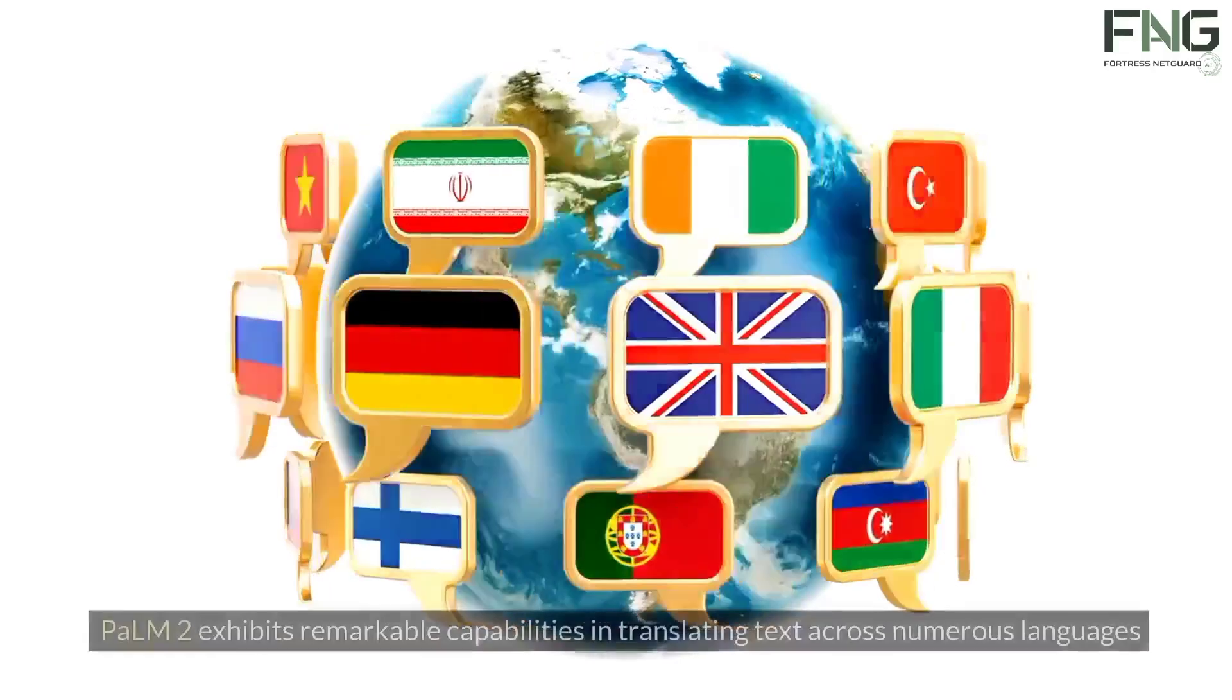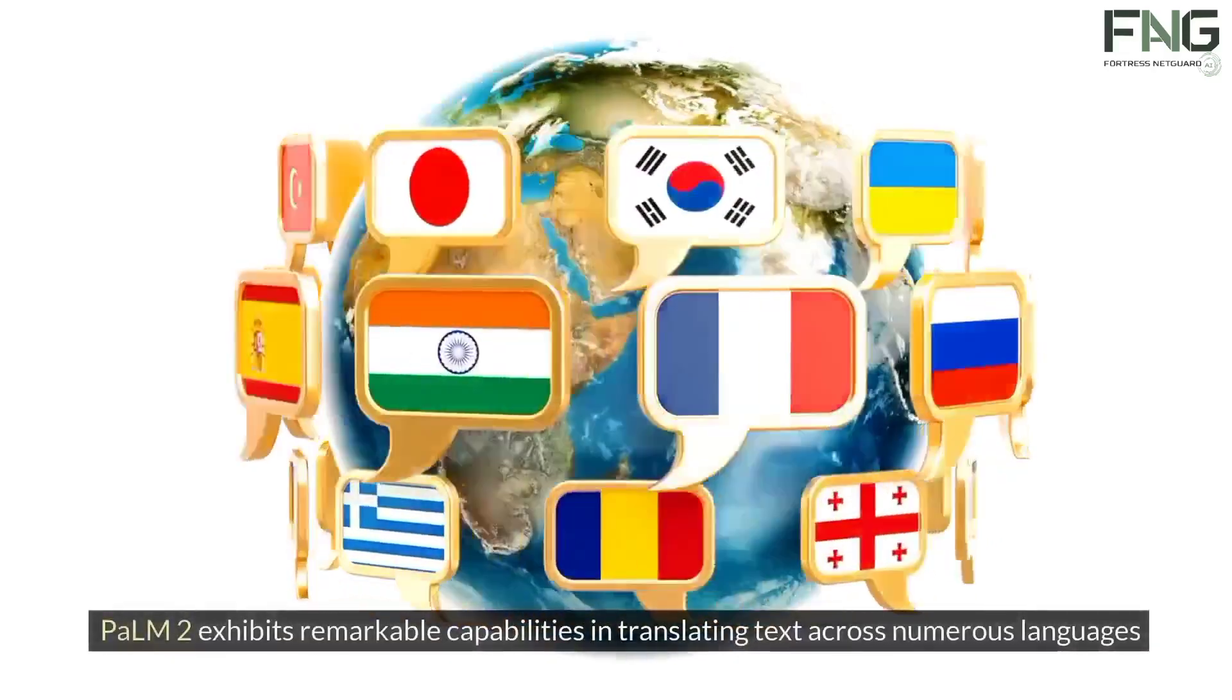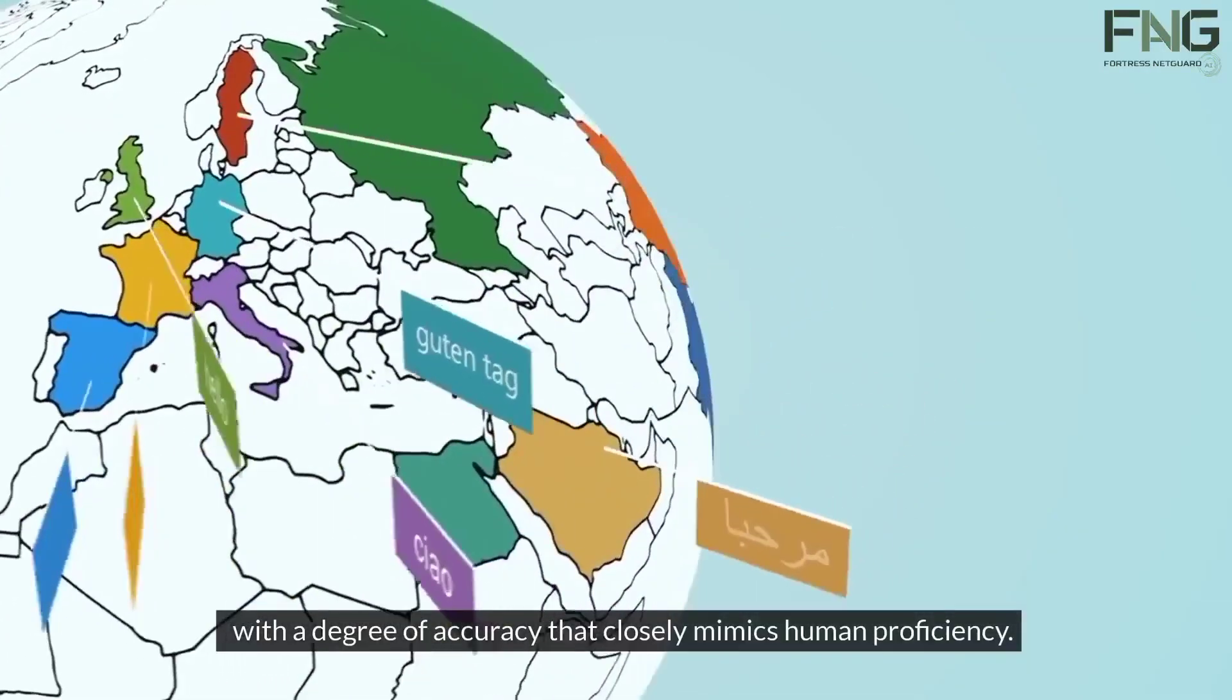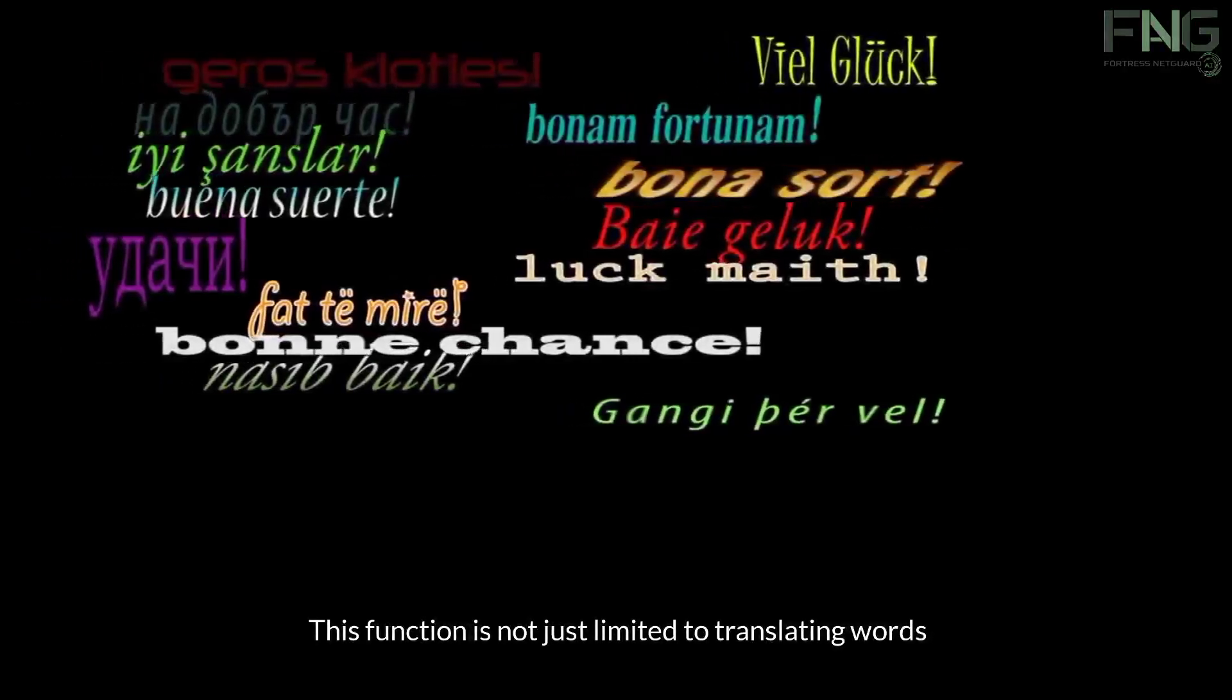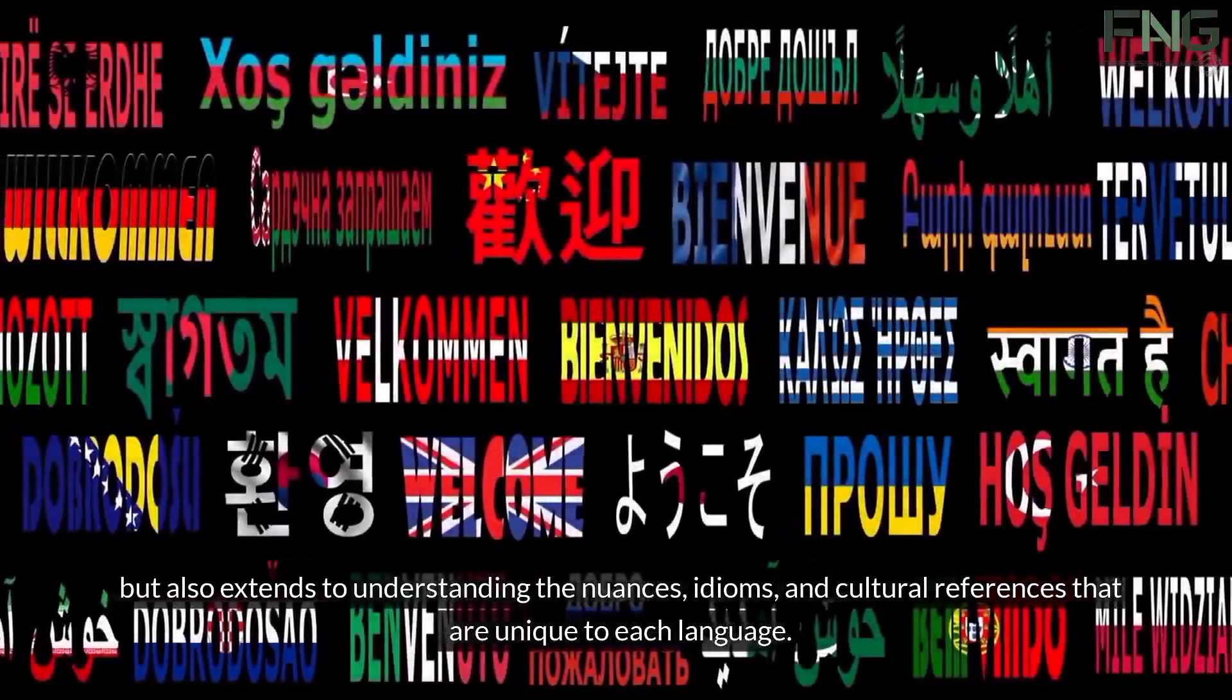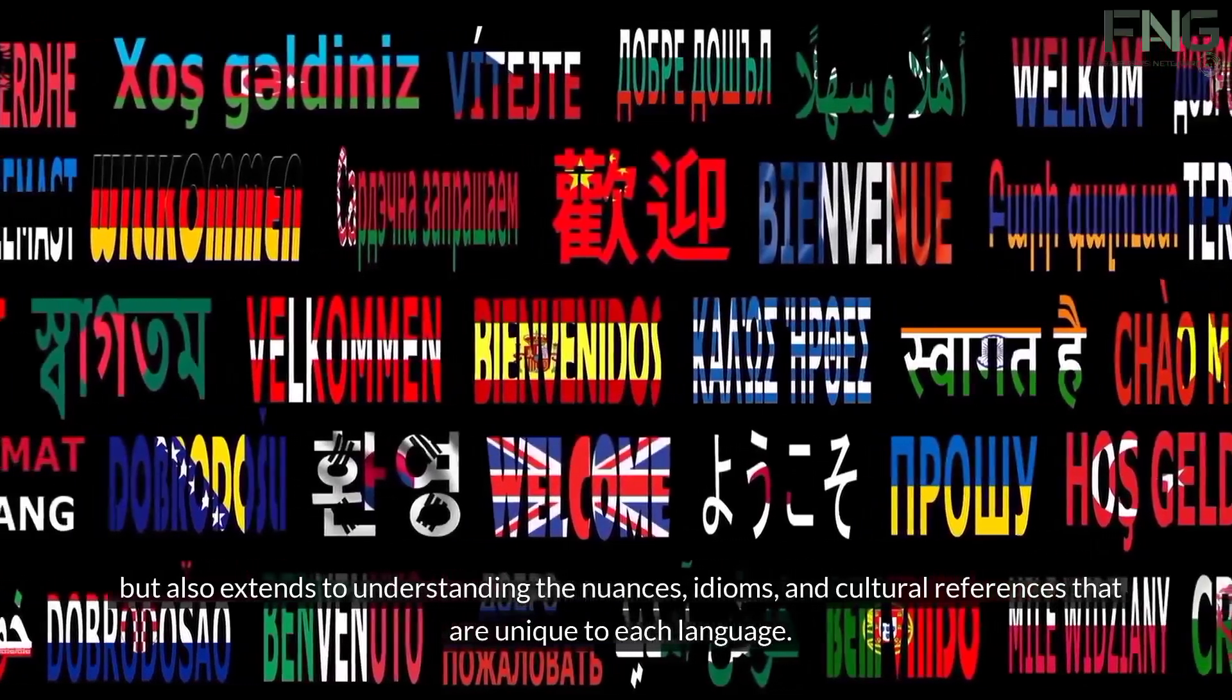Language translation. Palm 2 exhibits remarkable capabilities in translating text across numerous languages with a degree of accuracy that closely mimics human proficiency. This function is not just limited to translating words, but also extends to understanding the nuances, idioms, and cultural references that are unique to each language.